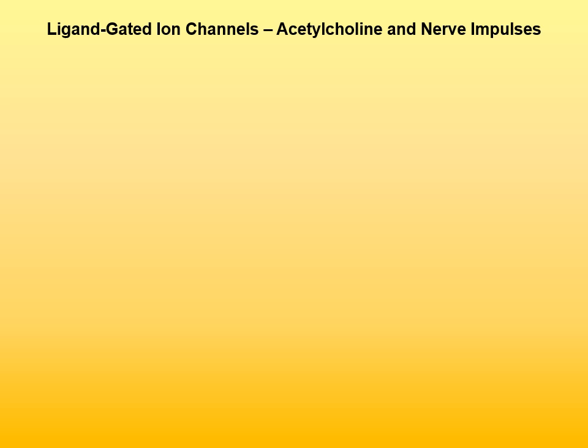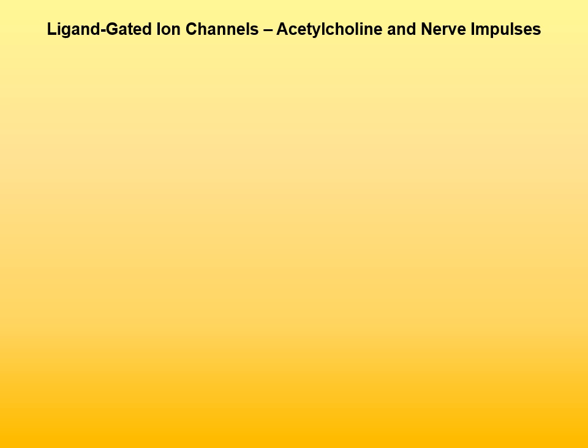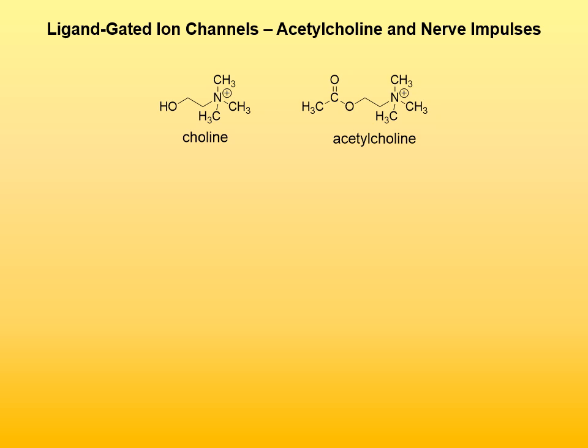We will examine ligand-gated ion channels on the example of acetylcholine and nerve impulses. Nerve impulses are communicated across synapses by neurotransmitters, one example being acetylcholine — a derivative of choline where the hydroxyl group has been acetylated. Presynaptic and postsynaptic membranes are separated by a synaptic cleft, a gap of about 50 nm. Upon arrival of a nerve impulse at the end of an axon, contents of about 300 vesicles of acetylcholine are exported into the cleft. The binding of acetylcholine to the postsynaptic membrane changes its ionic permeability and triggers an action potential.